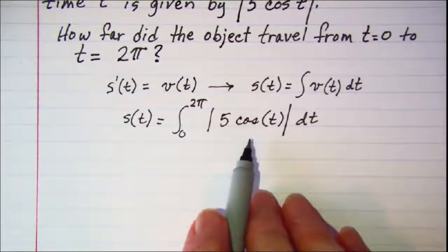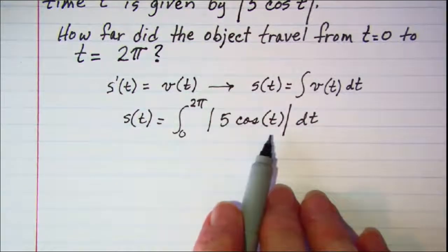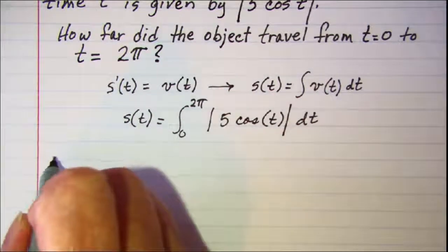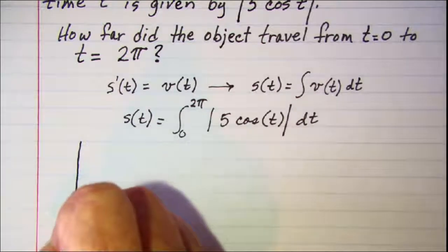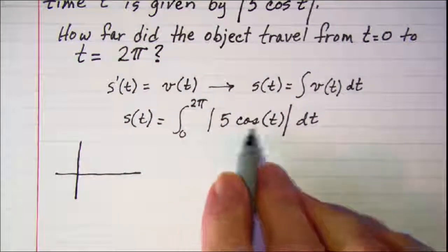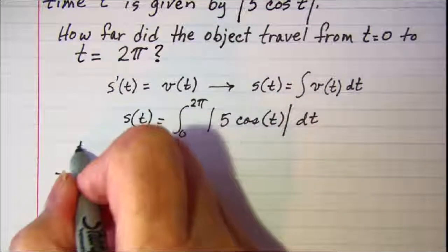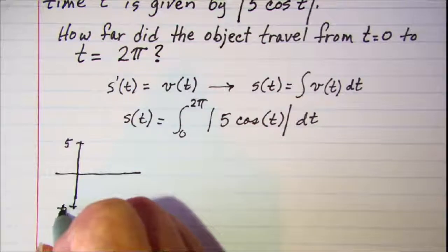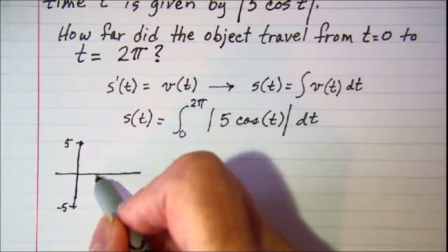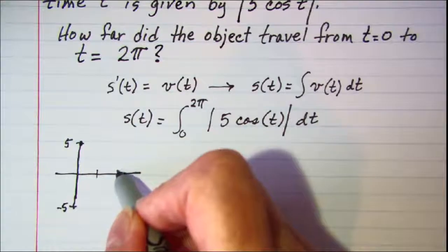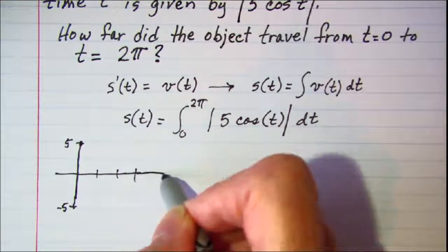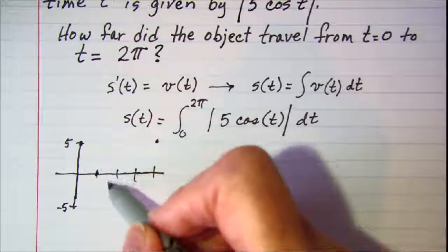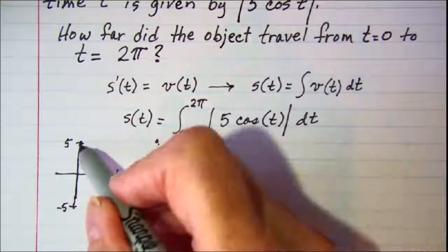Now since this is an absolute value function we need to look at the sketch of this curve. The sketch of 5 cosine t will have a max of 5 and a min of negative 5 and our cosine curve looks something like this.